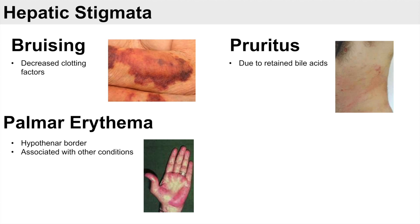Another stigmata of liver disease is palmar erythema, which is a reddening of the palms. It typically affects the hypothenar border — the area opposite the thumb — as you can see in the image showing a large reddening in that hypothenar area. Palmar erythema is not only associated with liver disease; it is also associated with other conditions such as rheumatoid arthritis.